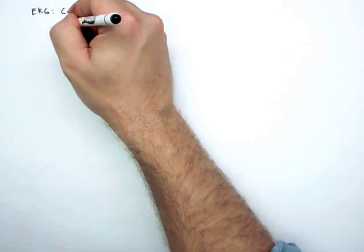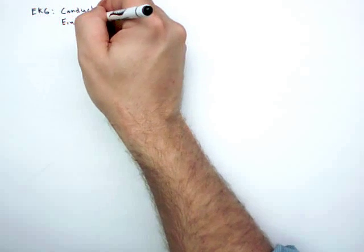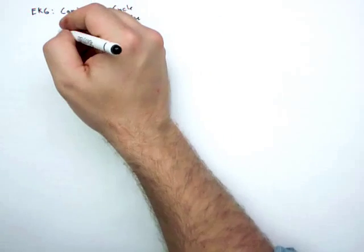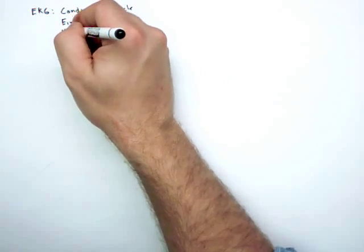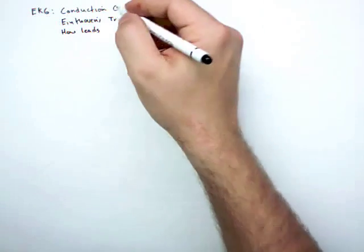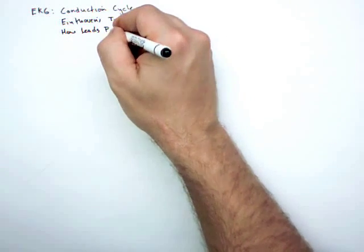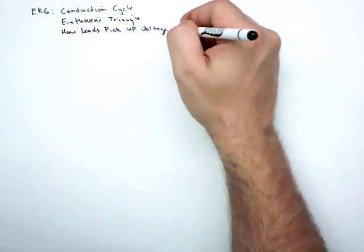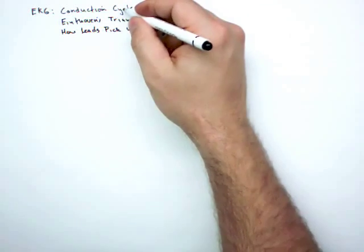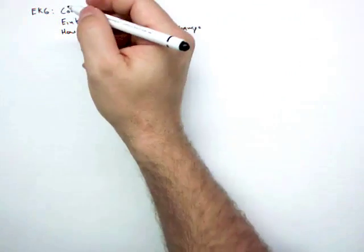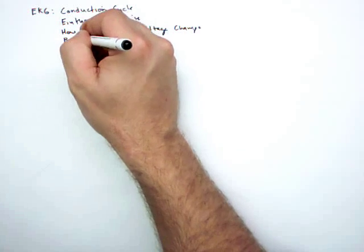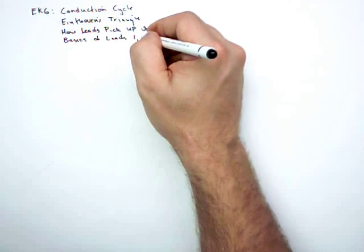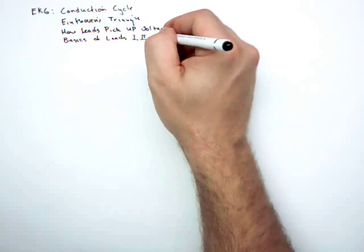We'll talk about Einthoven's triangle, talk about how it picks up voltage changes in the conduction cycle, and we'll talk about the basics of leads 1, 2, and 3.